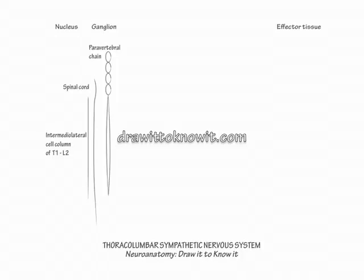Next draw the paravertebral chain. It resembles a string of pearls and lies just lateral to the vertebral column. We draw it as four circles and a long tail because of the 24 sympathetic ganglia, only four are clinically worth specifying.